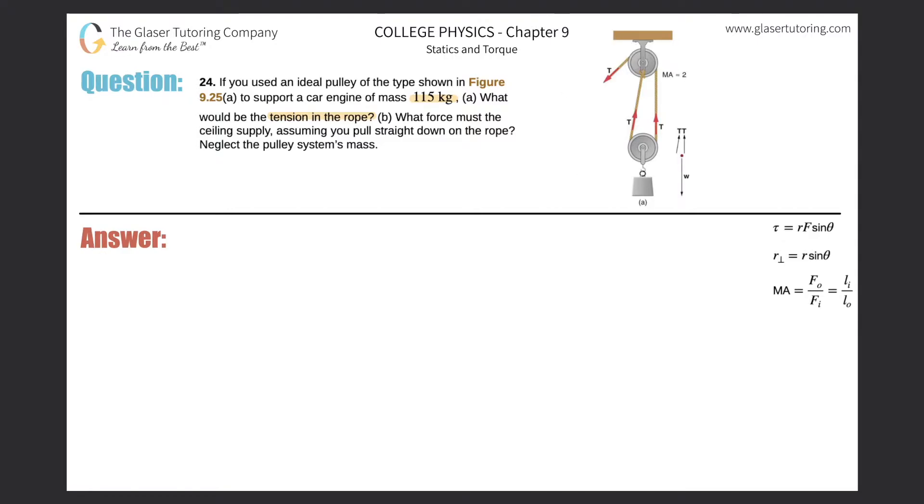Here is our mass, this thing right here told us weighs 115 kilograms. Therefore, if that has a mass, it's experiencing a force due to gravity and that would be pointing directly downward. Now, in order to support, as it says in the question over here, in order to support a car engine, we know this problem is in equilibrium.